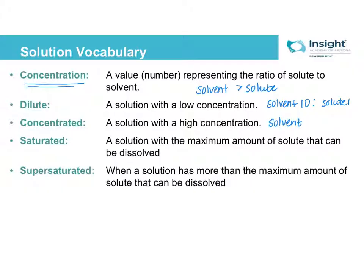A concentrated solution, you can think of it as for your 10 particles of solvent, maybe you have 8 particles of solute. So you're getting closer. There's still less solute than solvent. But you're getting closer to equal numbers. It's a higher concentration, or we call it concentrated.